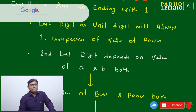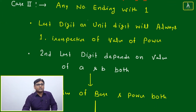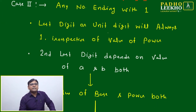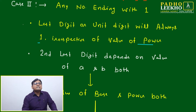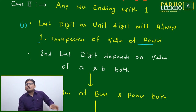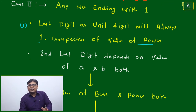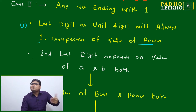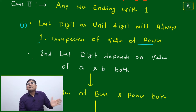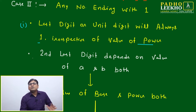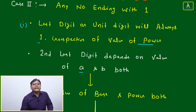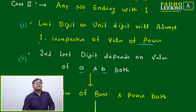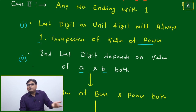Now we come to the second case, which is more interesting. For any number ending with one, the unit digit will always be one, irrespective of the value of the power. To find the last two digits of a number ending with one raised to some power, you follow three steps. First step: unit digit is fixed as one. Second step: the second last digit depends on both A (base) and B (power).